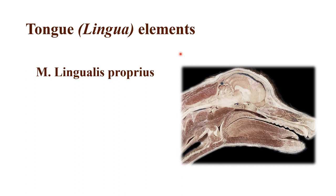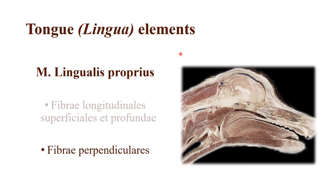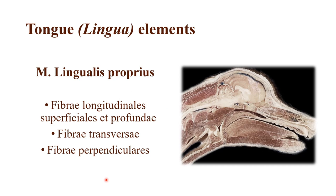Next up we have the musculus lingualis proprius, which is the main muscle of the tongue. It has three types of fibers: the longitudinal ones, which are superficial and deep, then the transverse ones and the perpendicular ones.